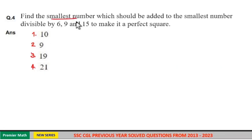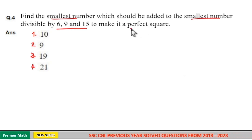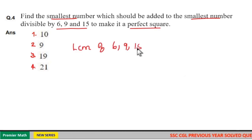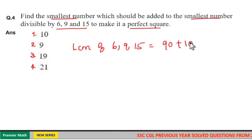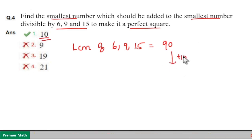Find the smallest number which should be added to the smallest number divisible by 6, 9 and 15 to make it a perfect square. Take the LCM of 6, 9 and 15, which is 90. If you add 10 to 90 it becomes 100. So option 1 is your answer — 10 is the smallest number which when added to 90 makes it a perfect square.